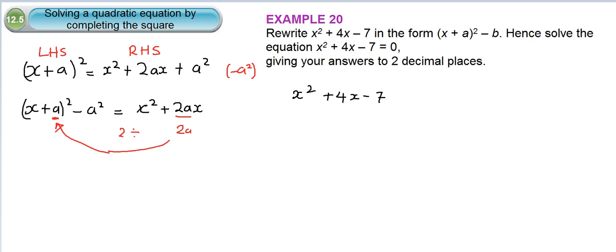Now you will notice that from the example we did earlier, this bit here, which is x squared plus 4x, can be rewritten as a plus half of the coefficient of x, as we did here. So that gives us 2. Then we put a square there.